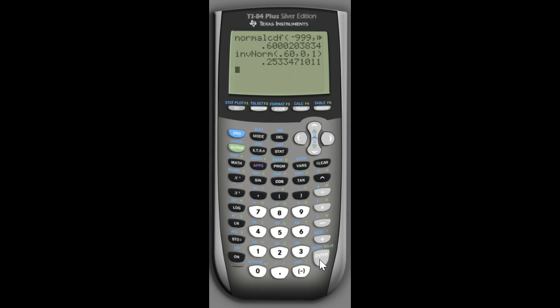So if I want this rounded to four decimal places, I would round 0.2534, not 2533. So note, when you do the inverse normal, you always, always, have to round up in order to get the correct percentile.